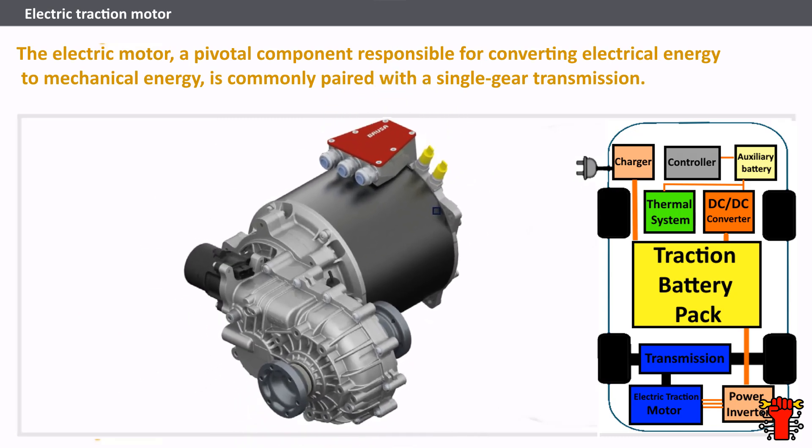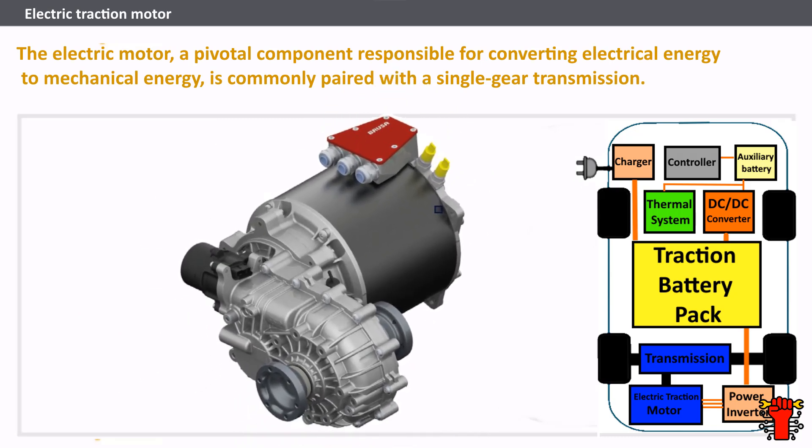The electric traction motor is a pivotal component responsible for converting electrical energy to mechanical energy. It is commonly paired with a single-gear transmission. Unlike combustion engine vehicles with variable gears, electric cars are typically automatic due to the unique torque characteristics of electric motors. Various types of motors — including brushed DC, induction, permanent magnet, and switched reluctance motors — have found application in electric vehicles, with induction and permanent magnet motors prevailing for their superior attributes.